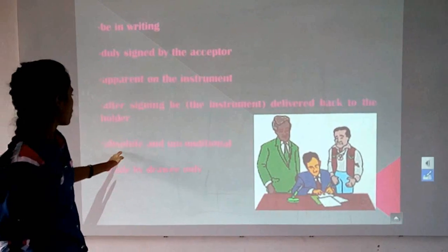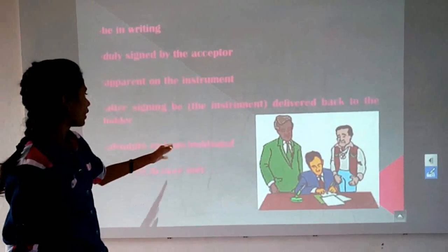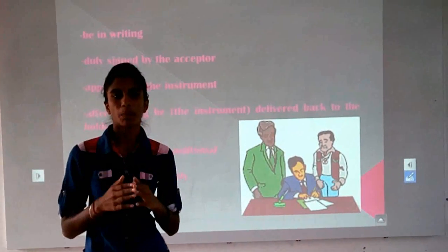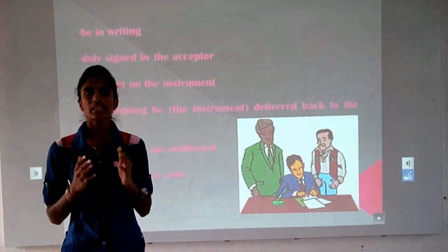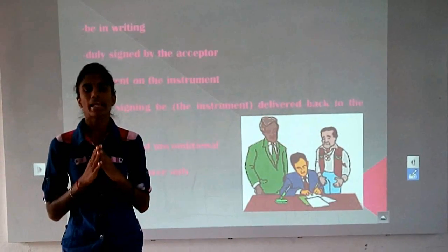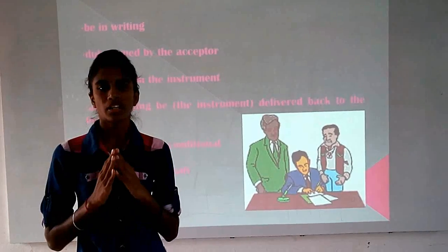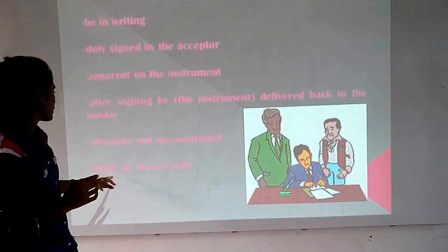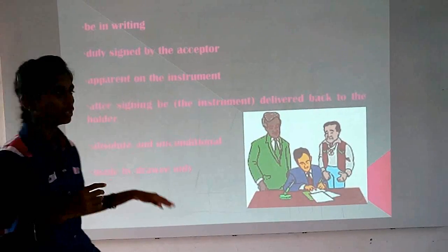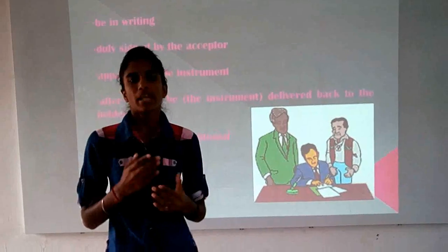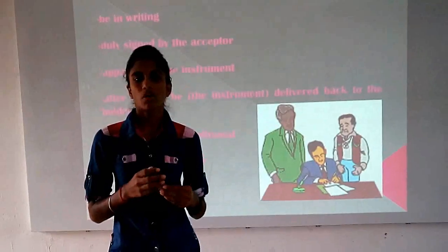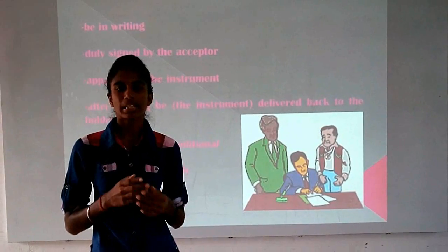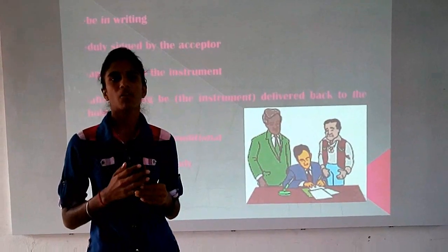Fifth, the acceptance must be absolute and unconditional. The acceptor must agree to pay the amount as mentioned in the instrument without any condition or limitation. Lastly, acceptance is made by the drawee only. A bill of exchange is accepted by the drawee only. You can also refer to section 17, Acts of Bill of Exchange.